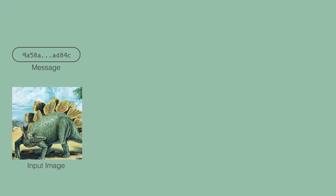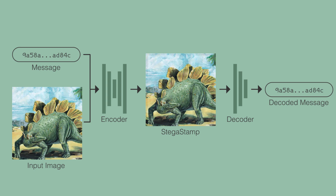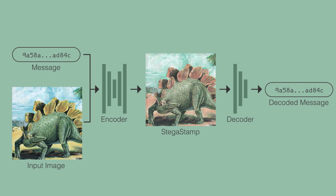Our system works by jointly training a pair of deep neural networks: an encoder that can hide a 100-bit message inside an image to create a StegaStamp, and a decoder that processes the photograph's StegaStamp to recover the hidden message. We jointly train these networks to be robust for use in the real world by training through a variety of differentiable image perturbations between the encoder and decoder, such as warping, blur, noise, color shifts, and JPEG compression.